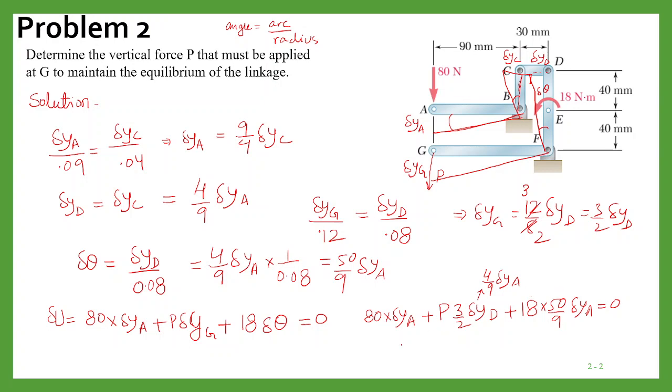So delta y_a we can take common, and then we can simply simplify this, and we get P as minus 270 newton.